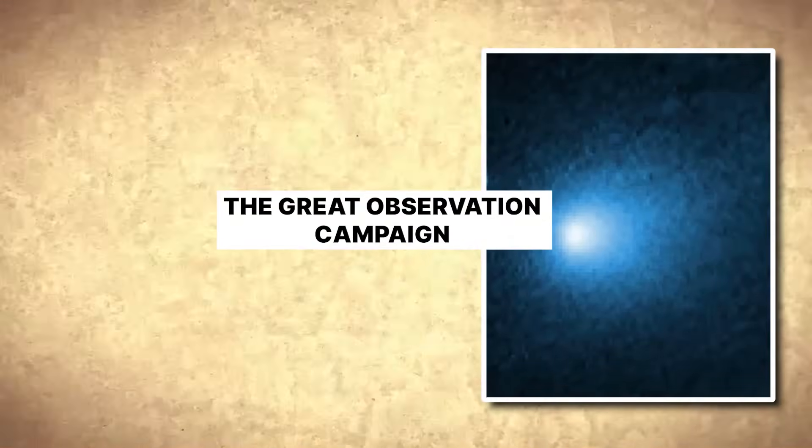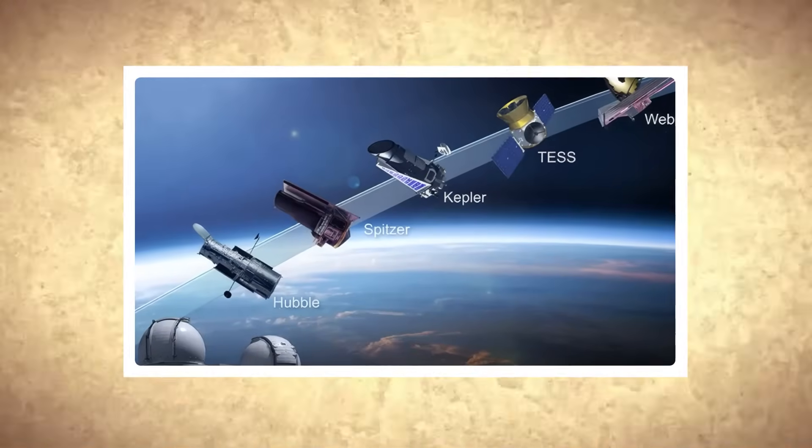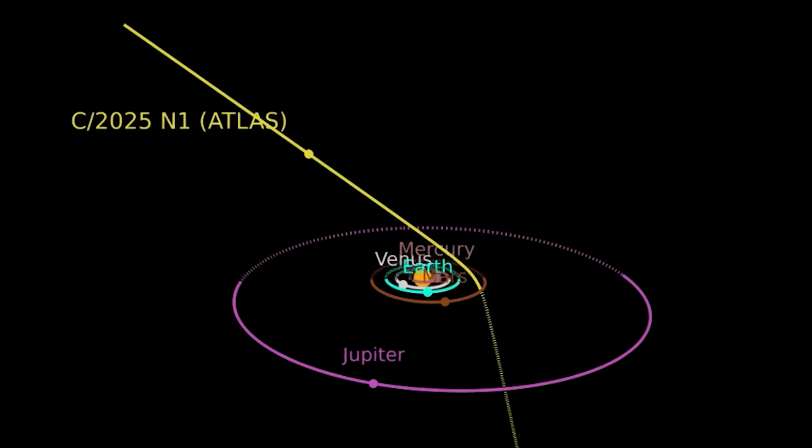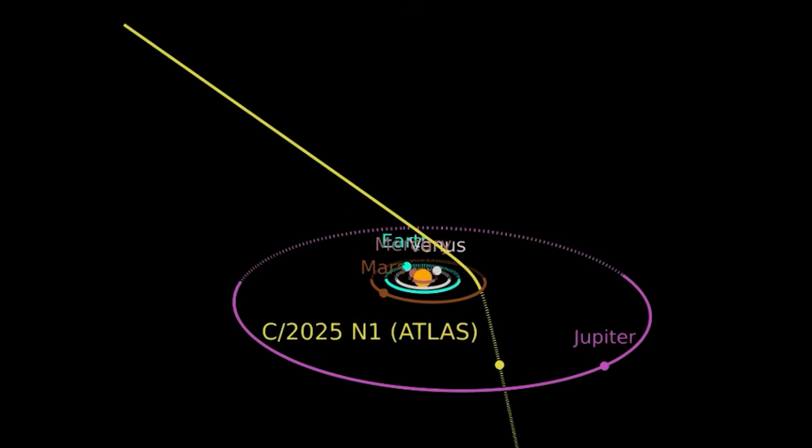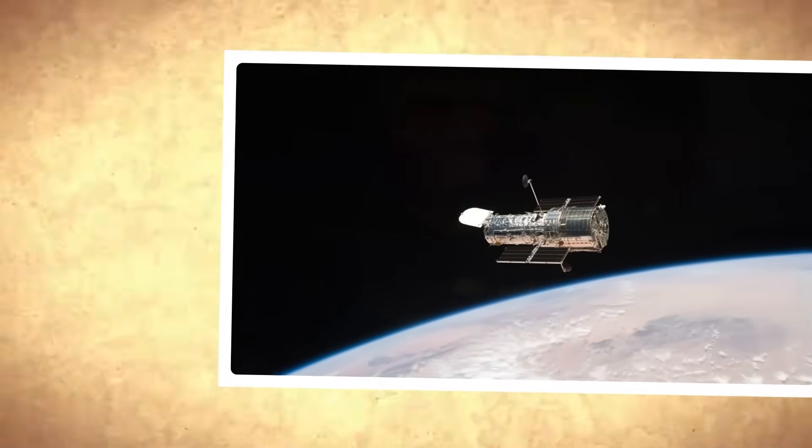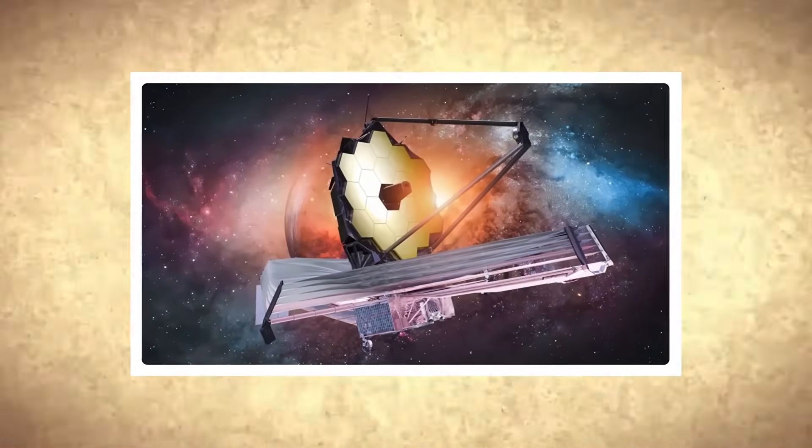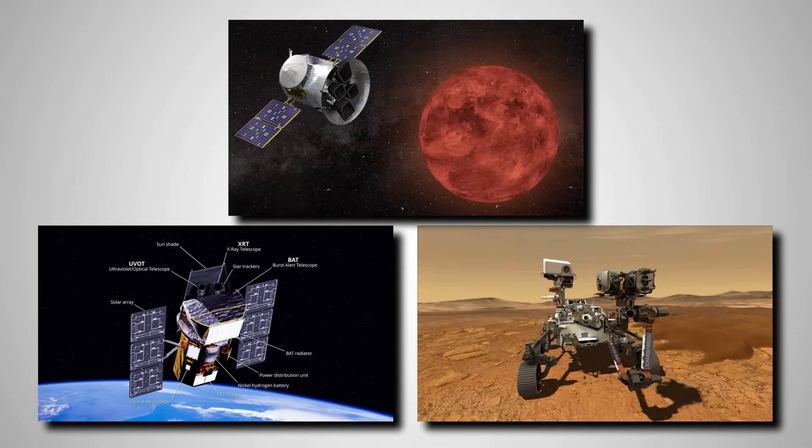The Great Observation Campaign. Right now, as you watch this, an unprecedented collaboration is happening across millions of miles of space. More than a dozen spacecraft and observatories, designed for completely different missions, have all temporarily shifted their focus to track this single object racing through our solar system. It's the largest coordinated observation campaign of an interstellar visitor in history. NASA's Hubble Space Telescope has made two separate observation runs. The James Webb Space Telescope added its infrared vision to the mix. The TESS Exoplanet Hunter, Swift Space Observatory, and even the Mars Perseverance rover on the surface of the red planet, all captured glimpses of the comet.